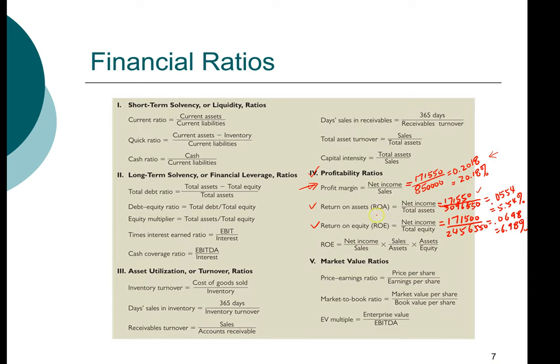The next ratio, return on asset, tells us how much net income we are able to generate for every dollar that we invest in assets. So for this particular company, for every dollar that we put into total asset, we can generate about five cents. So there's a big difference between profit margin and return on asset. One of the reasons we saw earlier was that this company has a very low turnover. We will see later on in the DuPont identity how we can use that in combination to see what is driving the overall profitability of the firm.